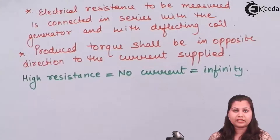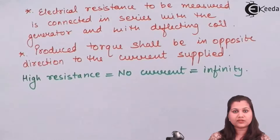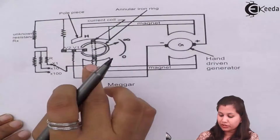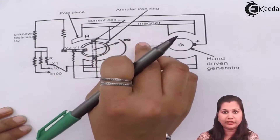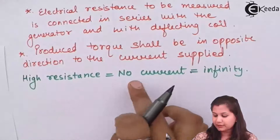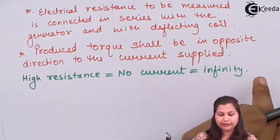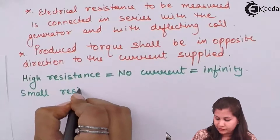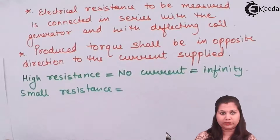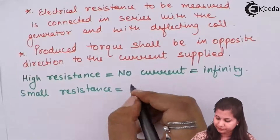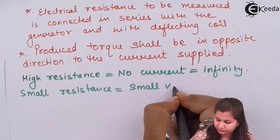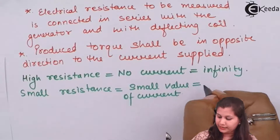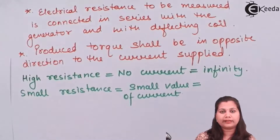When measuring high resistance, if the value of the unknown resistance is very high then no current will flow through the circuit, and when the current flowing is very small the pointer will be at the infinity position. So high resistance means no current and pointer at infinity. If the value of the unknown resistance is very small then a small amount of current will be flowing and the pointer will move between zero and infinity.